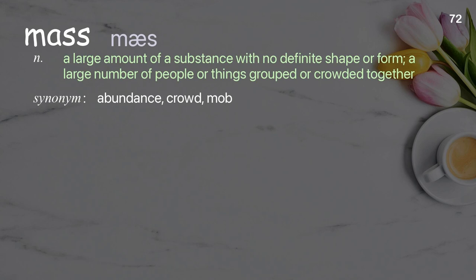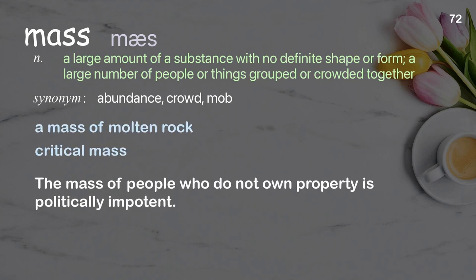Mass: a large amount of a substance with no definite shape or form; a large number of people or things grouped or crowded together. Examples: a mass of molten rock; critical mass; the mass of people who do not own property is politically impotent.